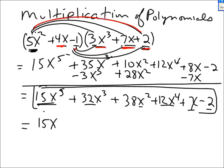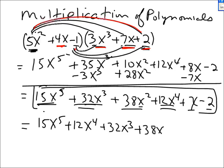In descending order: 15x to the 5th is the largest term, then plus 12x to the 4th, then plus 32x cubed, then plus 38x squared, plus x, minus 2. I would not go to that extra line unless my teacher insisted. After all, you could make a mistake there and lose a point. Don't do more than you need to — it takes time and opens you up to silly mistakes.